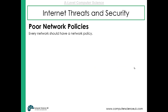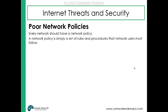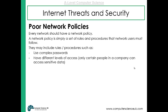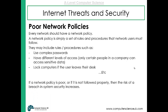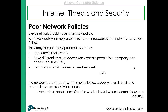Poor network policies are another threat. Every network needs policies — rules about how to use the network. Network policies are there to make sure users use the network appropriately. Rules might include using complex passwords, having different levels of access so certain people can access data that others can't, and locking computers when a user leaves their desk. If a network policy is poor or not followed properly, the network will be at risk. People are often the weakest point in system security — if a policy isn't followed, it's people putting the network in jeopardy.